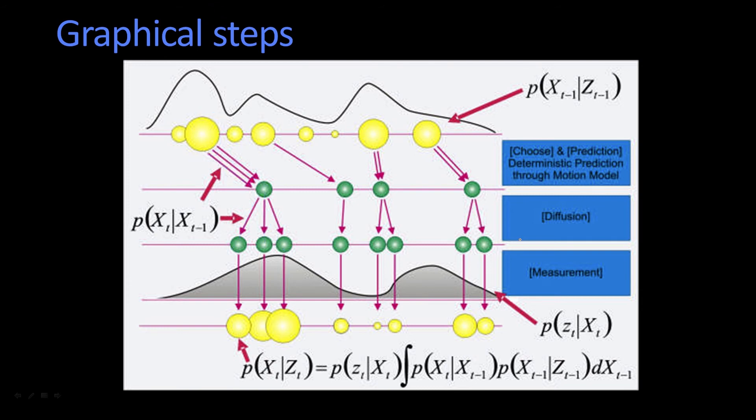Then what we do is we take our measurement, and we've got p of z given x. That's what this value is. And we just multiply these weights, which are all one to start with, by that value. Oh, here it is, p of z given x. We just multiply it, and we end up with this new set of particles.